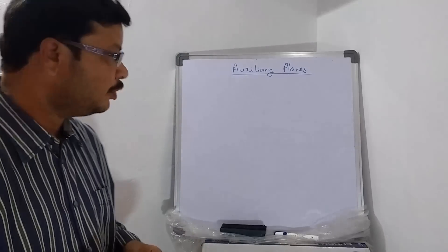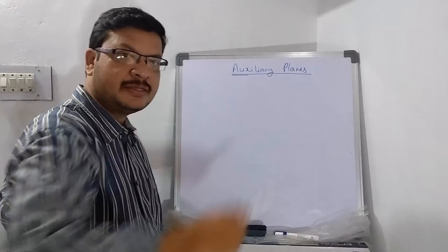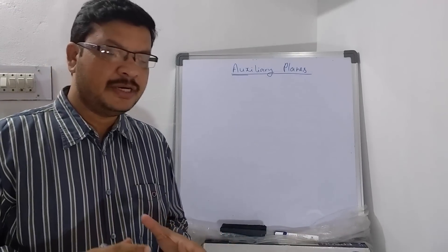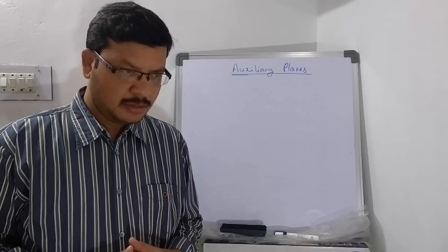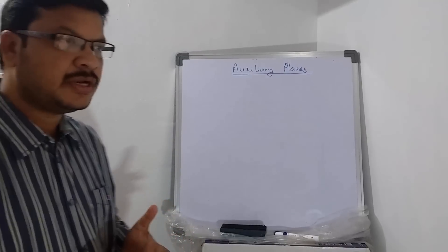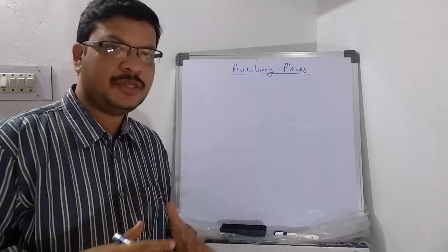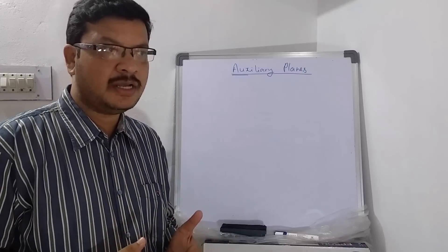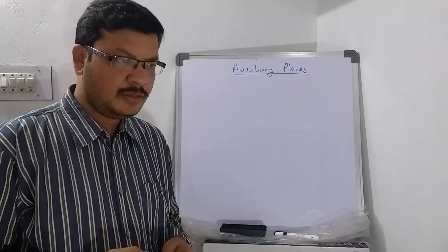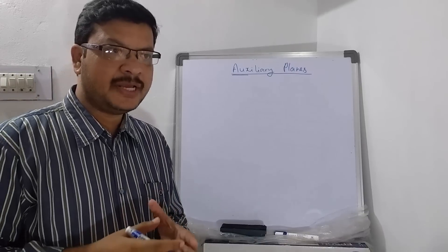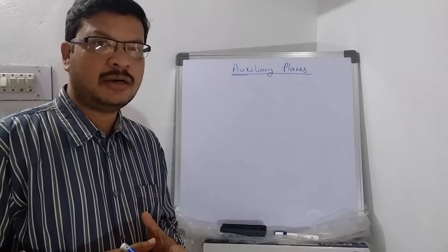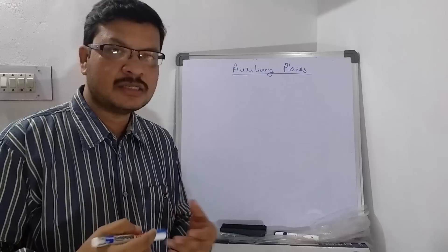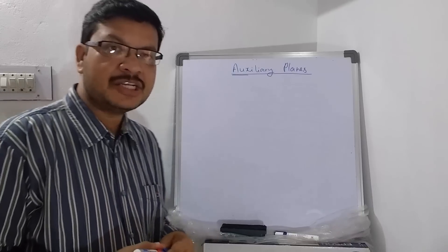In this tutorial, I will explain about projections of auxiliary planes. In general, we will use front view and top view for the complete description of the object. But in some special cases, these two views are not sufficient to completely describe the object. We have to go for some additional views called auxiliary views. The planes used to obtain these auxiliary views are called auxiliary planes — that is, the additional reference plane.